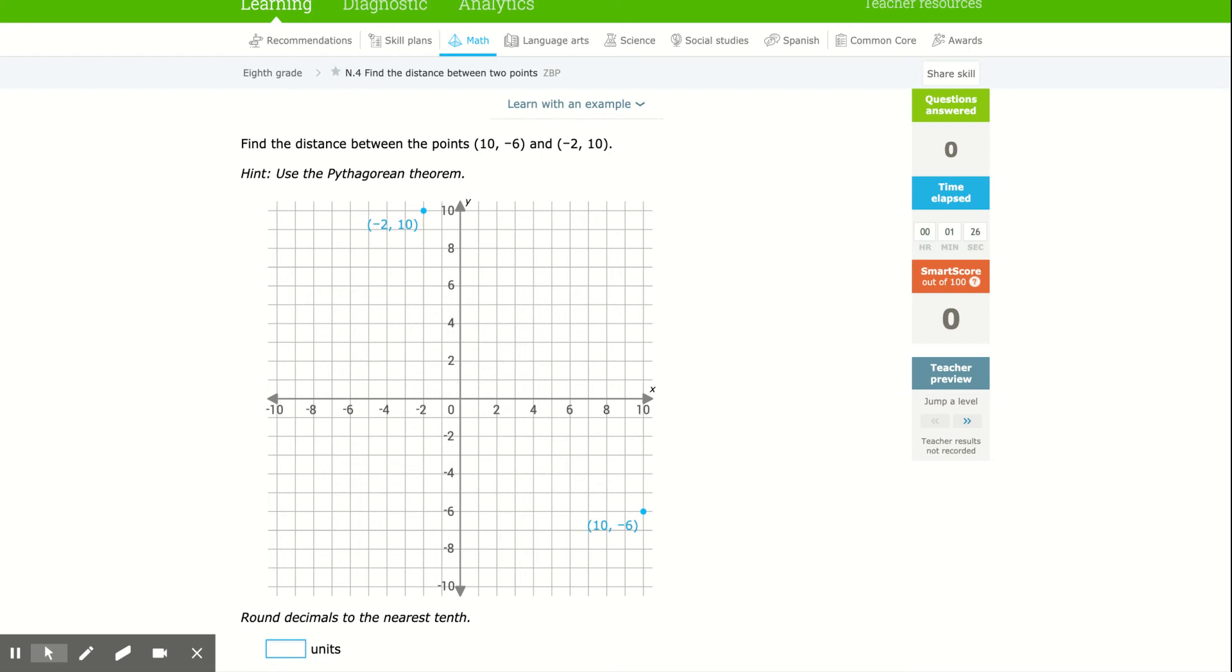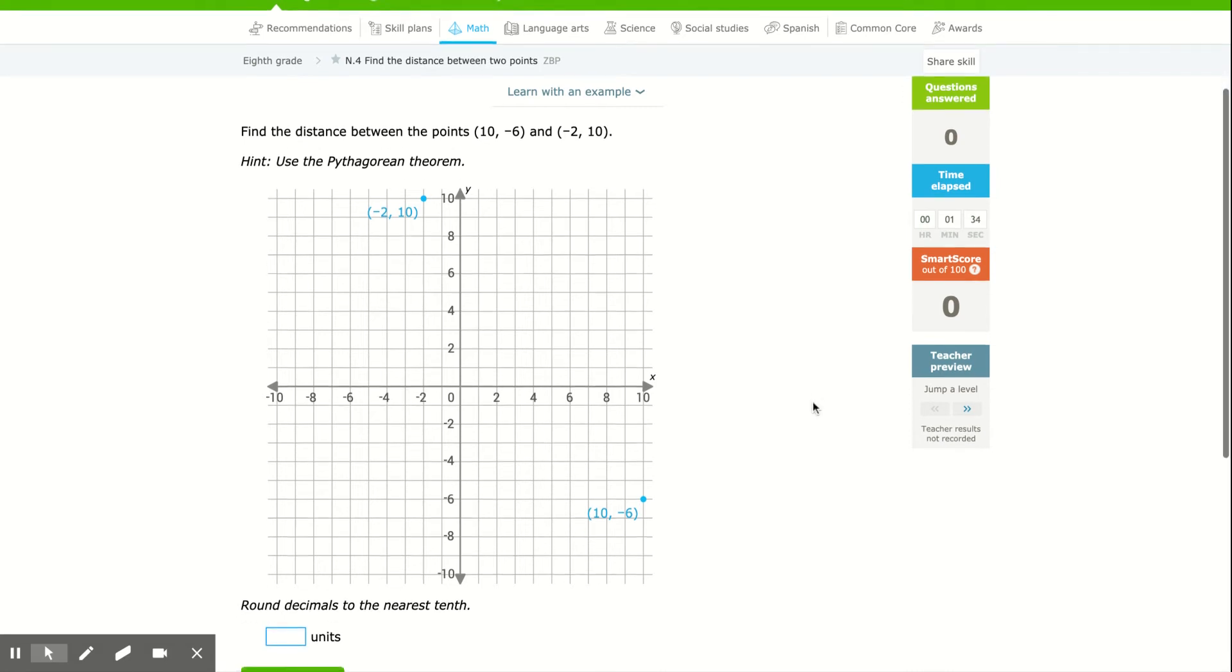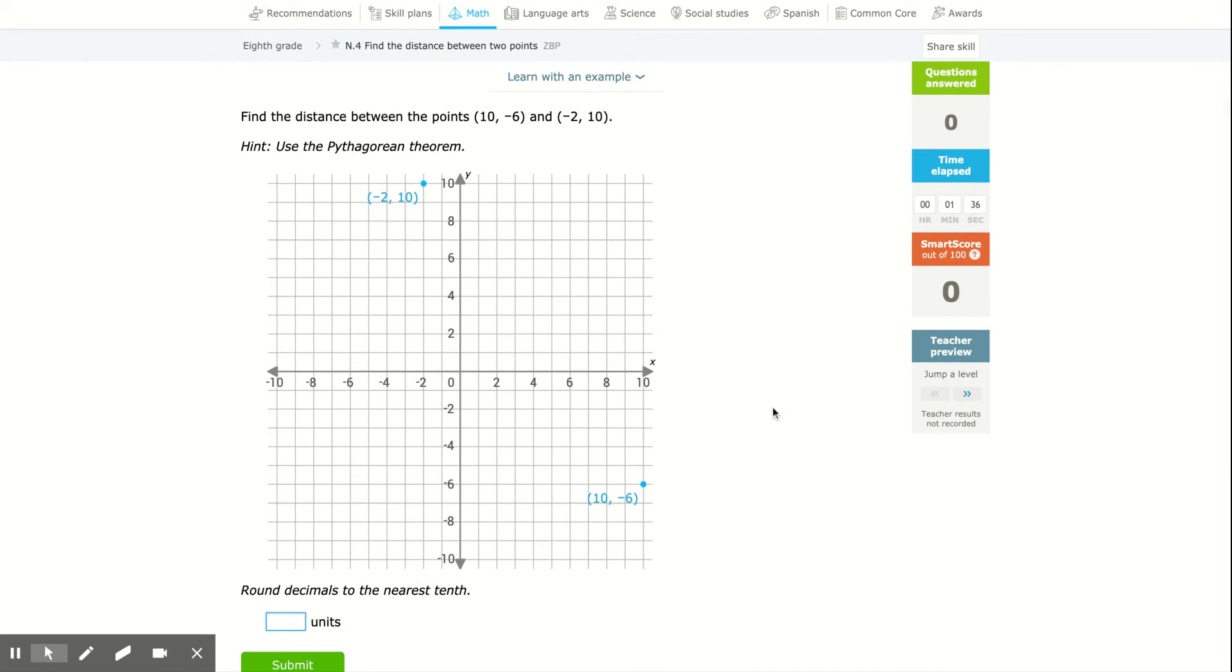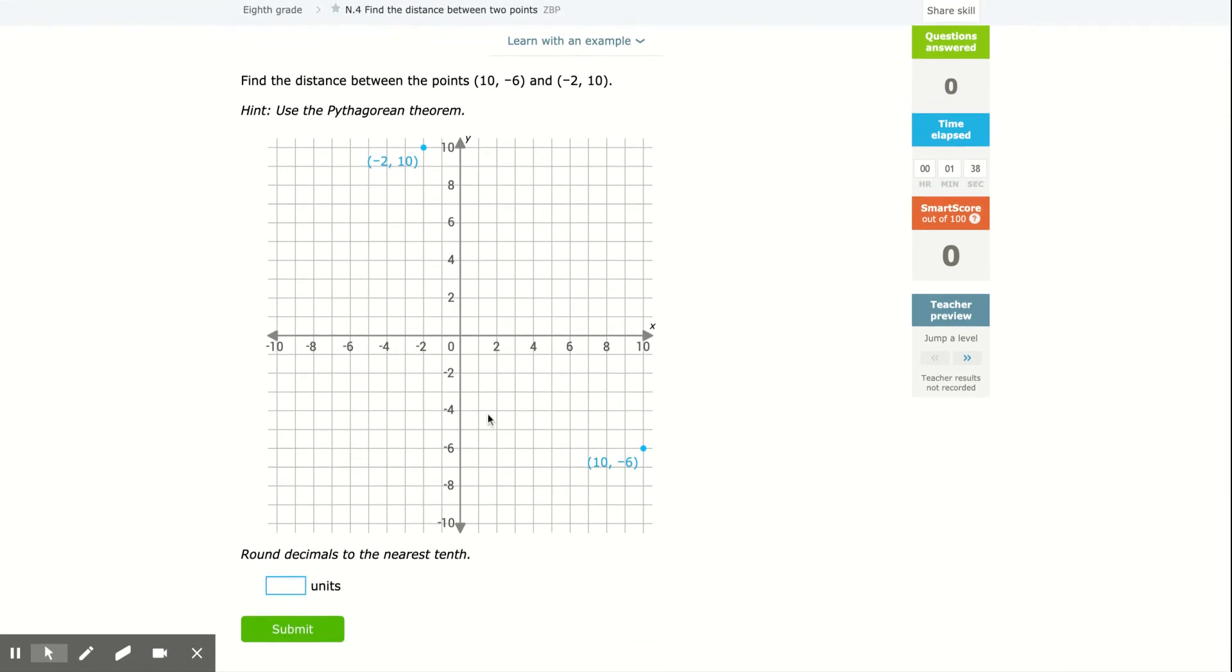Welcome! This lesson is going to be using the Pythagorean Theorem, which we've learned, to find the distance between two given points in the coordinate plane. Initially, they're going to give you a graph, or you should be able to take graph paper and graph the two points.